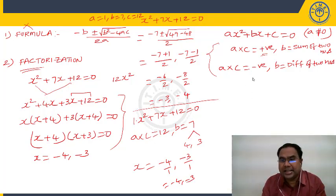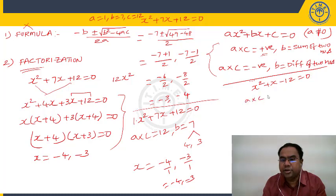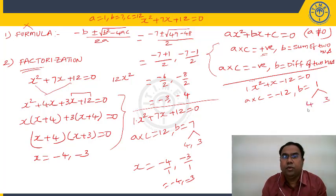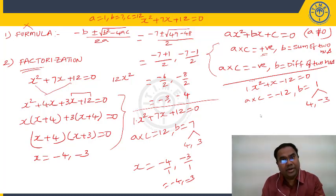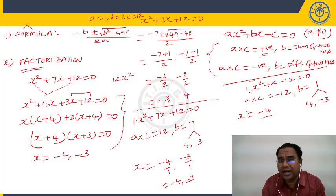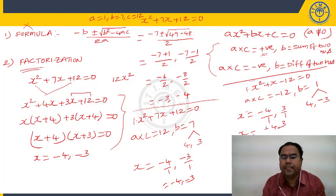Another example: X² + X − 12 = 0. A×C = 1×(−12) = −12, B = 1. A×C is negative, so write B as the difference of two numbers. We need difference = 1 and product = 12: use 4 and −3. 4×(−3) = −12 and 4+(−3) = 1. Change the sign while writing roots: +4 becomes −4 and −3 becomes +3. Divide by coefficient of X² (which is 1). Roots are −4 and 3.